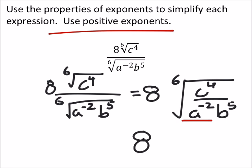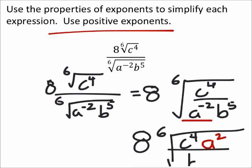So I've got 8 times the 6th root of c to the 4th. But once again I've reciprocated that a. So now it's a to the power of a positive 2 all over b to the 5th.